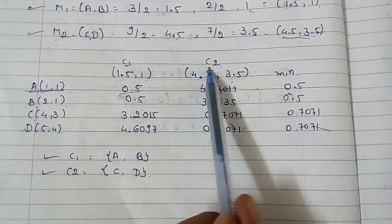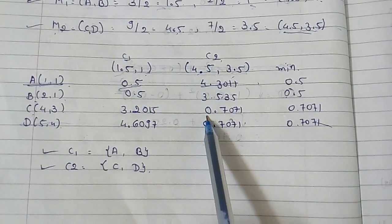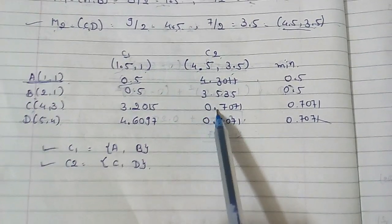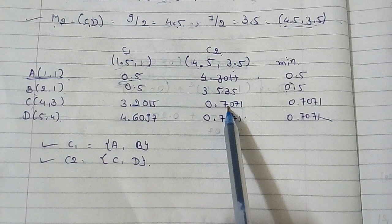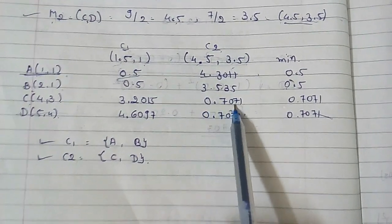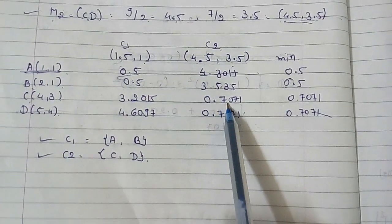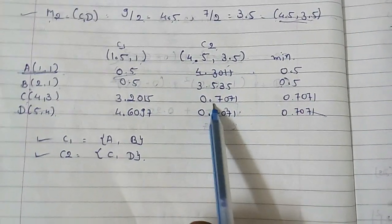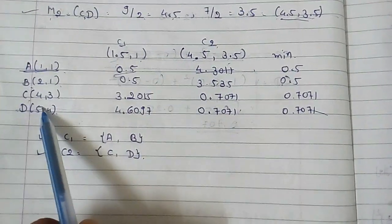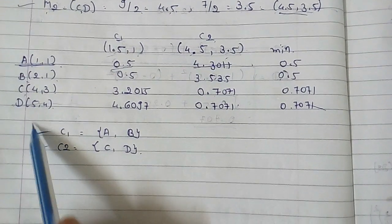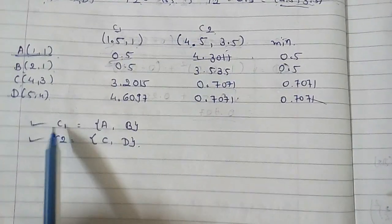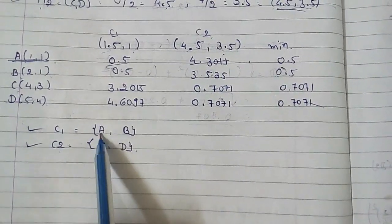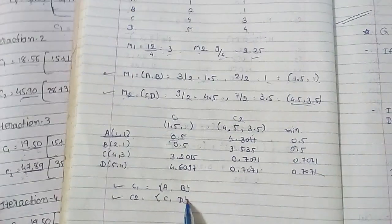C has distance 0.7071, so you can consider C as in c2 cluster because the minimum distance is 0.7071 that you are getting from the c2 point. So you can consider this value in c2 cluster. Same for D, so you will get c1 as A and B, and c2 as C and D.